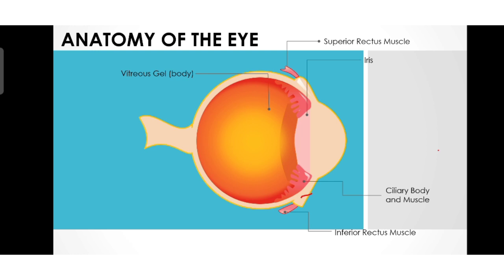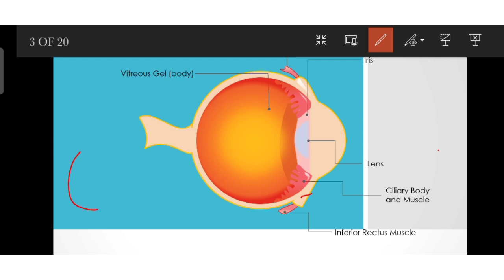Next we have the lens. The lens is biconvex and also crystalline. It brings rays of light into focus and produces an image on the retina. The lens is also a refractive surface of the eye.